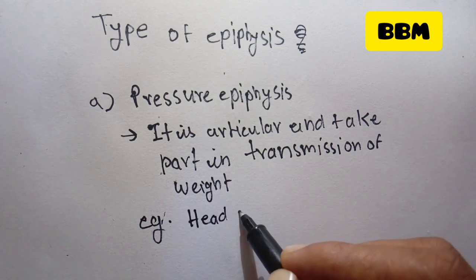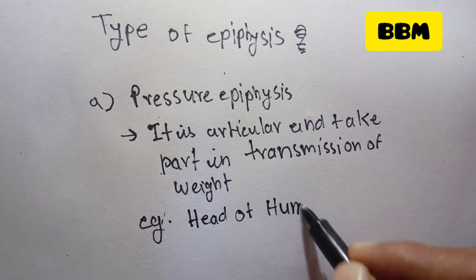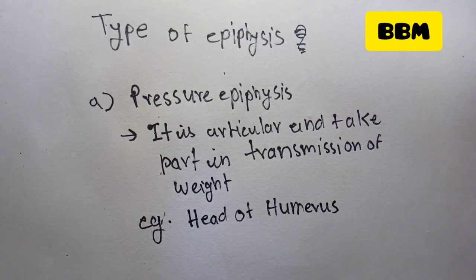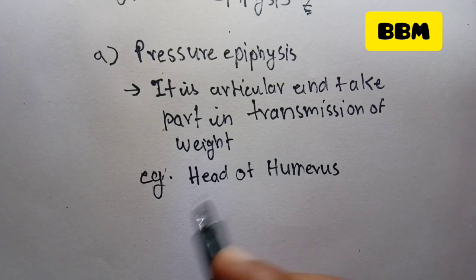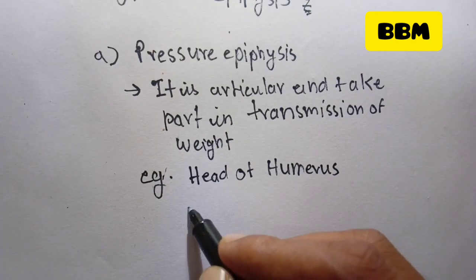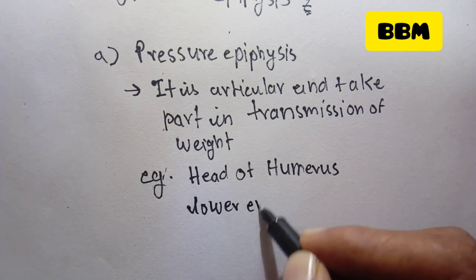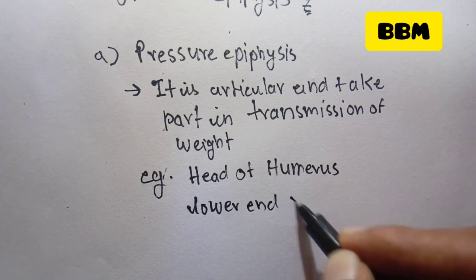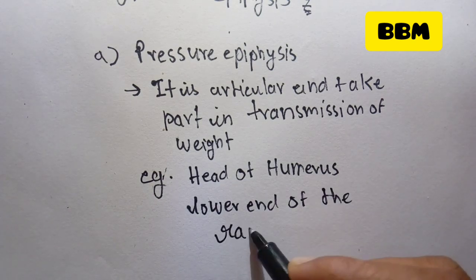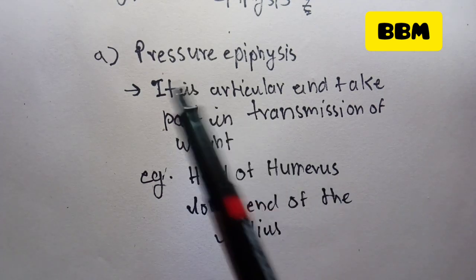Examples of Pressure Epiphysis include the head of the humerus. The lower end of the radius was mentioned but that is not a pressure Epiphysis.